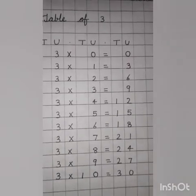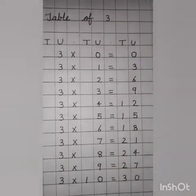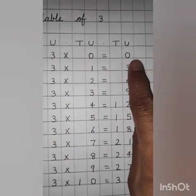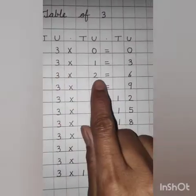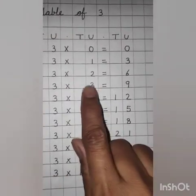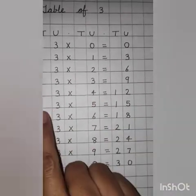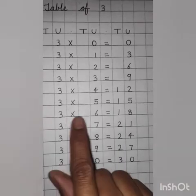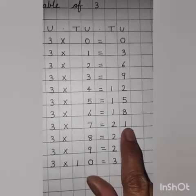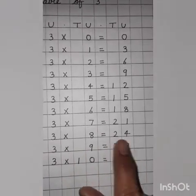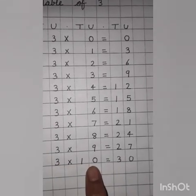So, one more time. Repeat after me. Three zeros are? Zero. Three ones are? Three. Three twos are? Six. Three eights are? Twenty-four. Three nines are? Twenty-seven. Three tens are? Thirty.